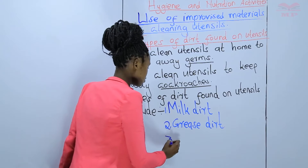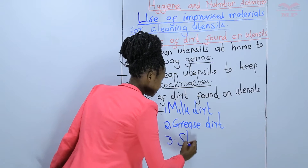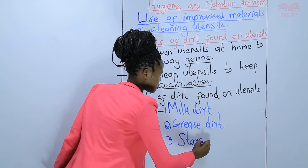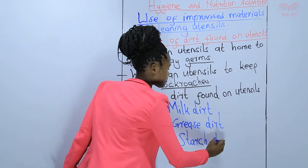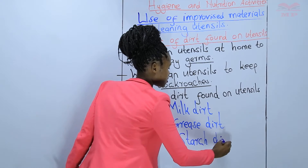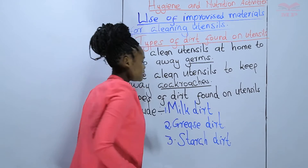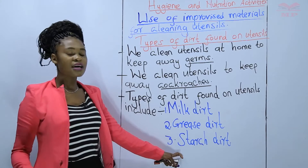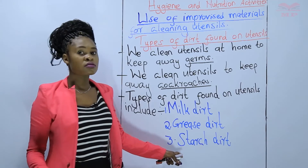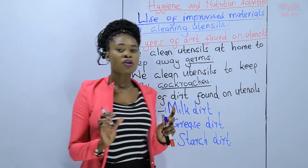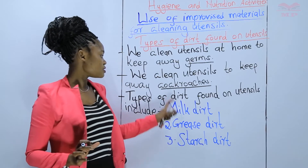Then we have the last one — we call it starch dirt. Starch dirt is the remains of food that remain on a plate. We call them starch dirt. So, these are the main types of dirt that are found on utensils.